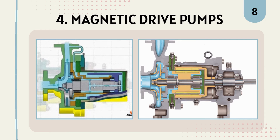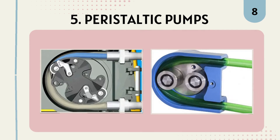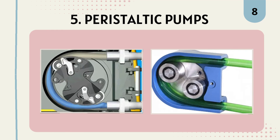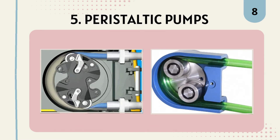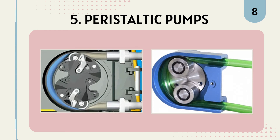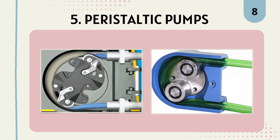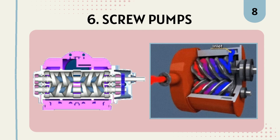The next type of pump used in some industries is the peristaltic pump. Peristaltic pumps use rollers to compress a flexible tube, pushing the fluid through the tube. They are suitable for pumping shear-sensitive and abrasive fluids and are often used in pharmaceutical, food processing, and chemical applications.